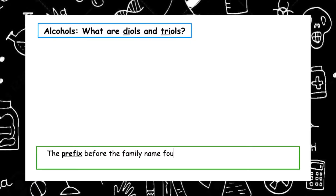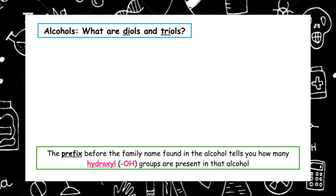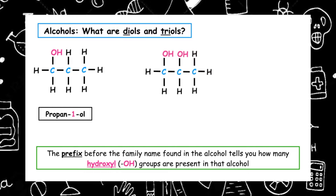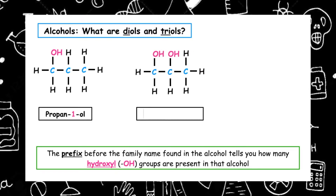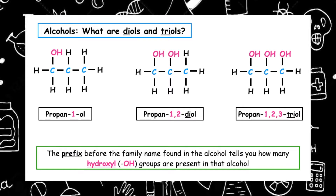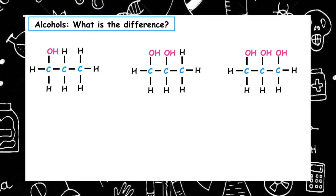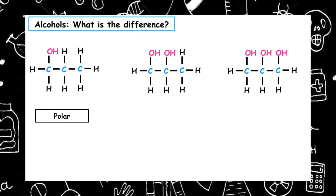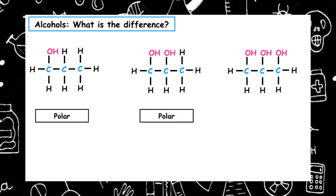The prefix before the family name found in the alcohol tells you how many hydroxyl groups are present in that alcohol. Here we have propan-1-ol. The second example is propan-1,2-diol, 'di' meaning two, telling us we have two hydroxyl groups in positions one and two. The third example is propan-1,2,3-triol, meaning we have three hydroxyl groups in positions one, two, and three of the alcohol. They have the same number of carbon atoms and the only factor that changes is the number of hydroxyl groups.